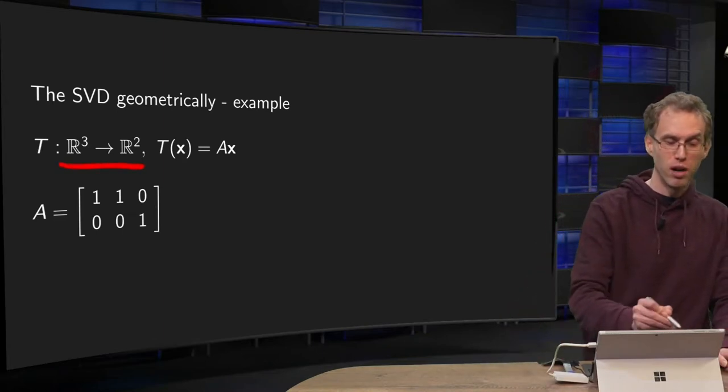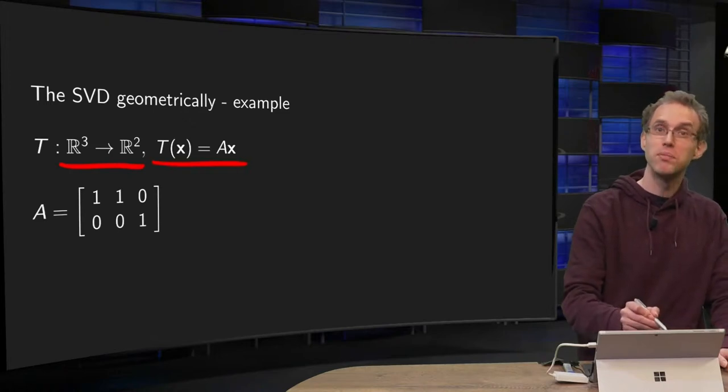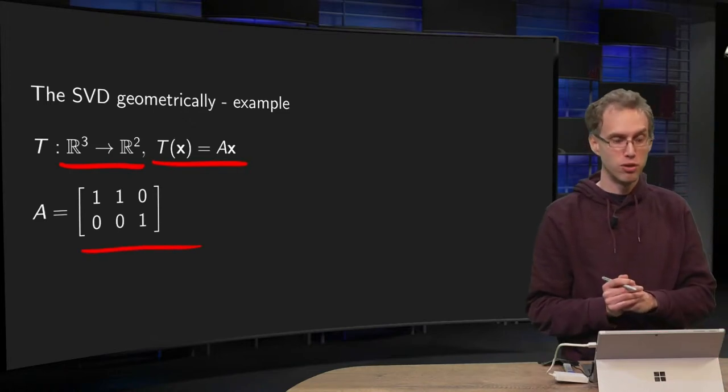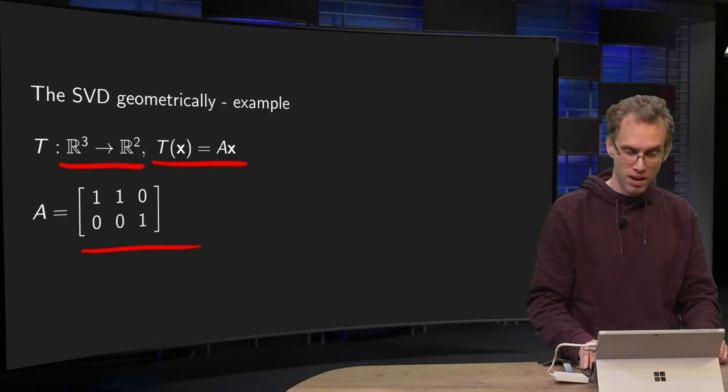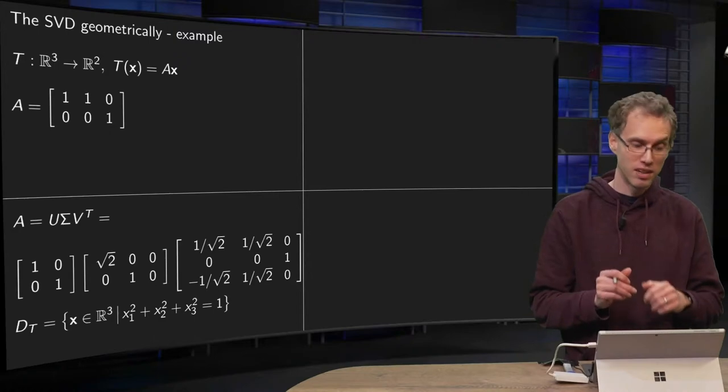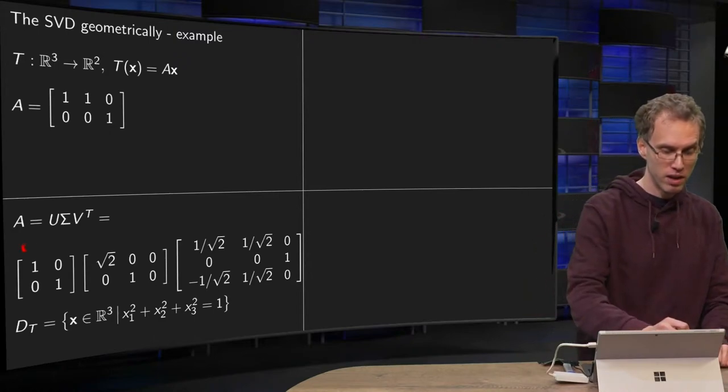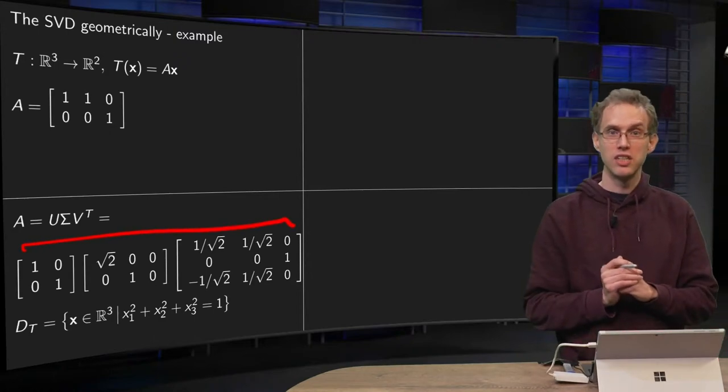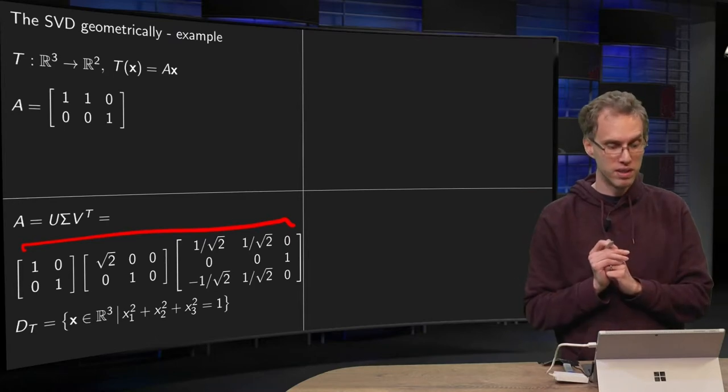So we go from R³ to R², T(x) = Ax, and we take this 2 by 3 matrix A. We take this one because we already know its singular value decomposition - we did that in a previous video - and it was given like this. So there we have our U, Σ, and V transpose.